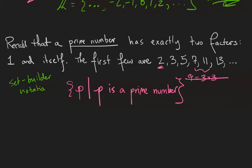And again, the way that you read this is this is the set of, that's what this opening curly brace refers to, all whatever these elements are called, so in this case P. This line is typically read as such that, and then some description that the elements of the set satisfy. So in this case, P is a prime number. So that's how you read set builder notation.